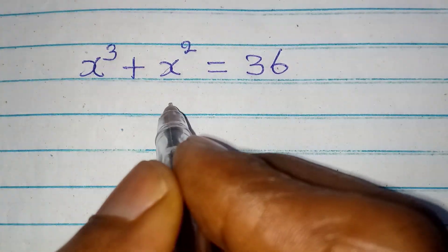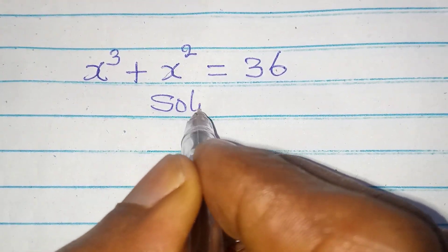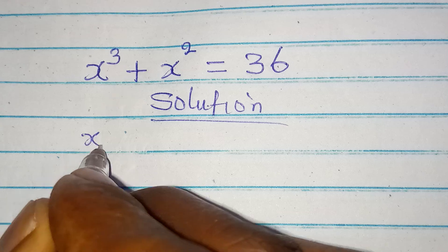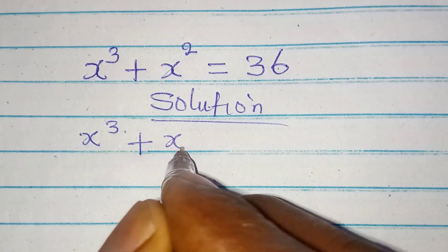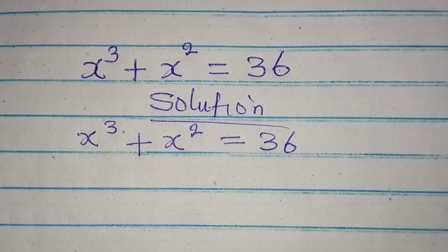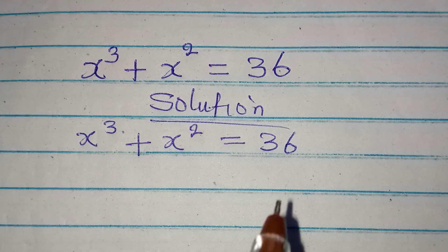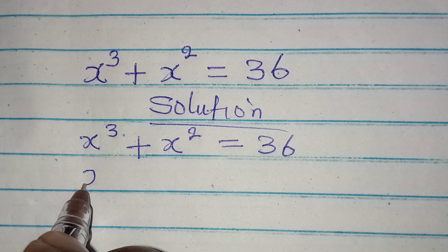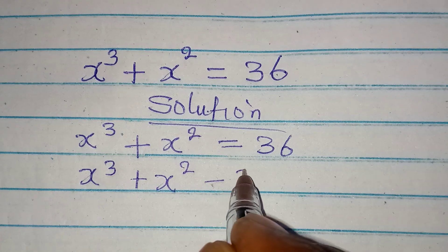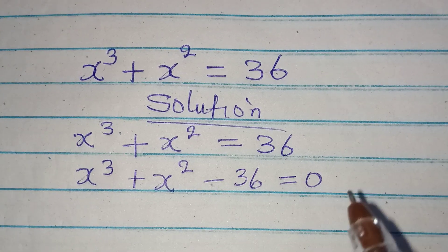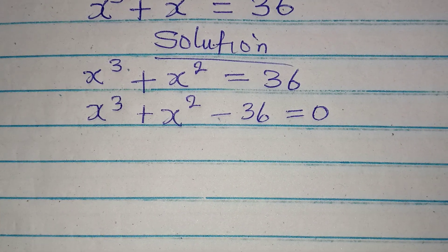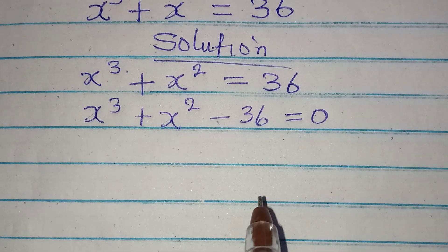Let's provide the solution to this problem. We have x to the power of 3 plus x to the power of 2 equals 36. We want to solve this completely, so we take 36 to the left and get x to the power of 3 plus x to the power of 2 minus 36 equal to 0. By looking at this, it is very difficult or almost impossible to factorize directly.